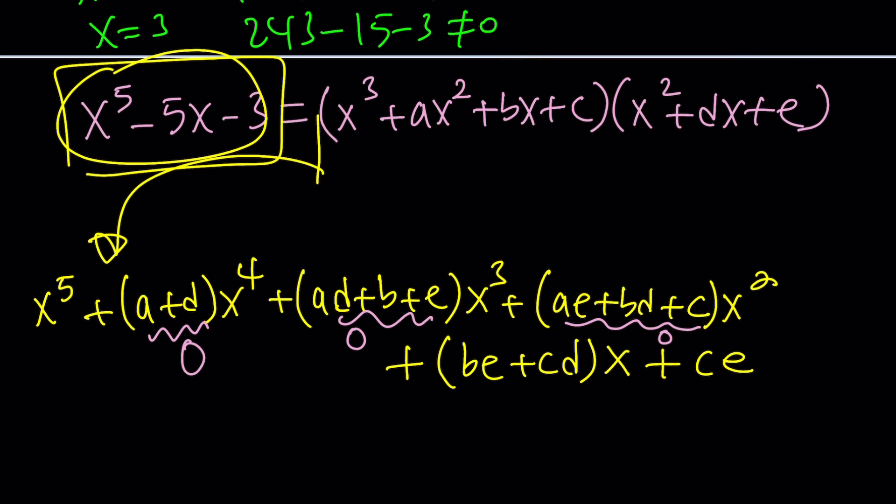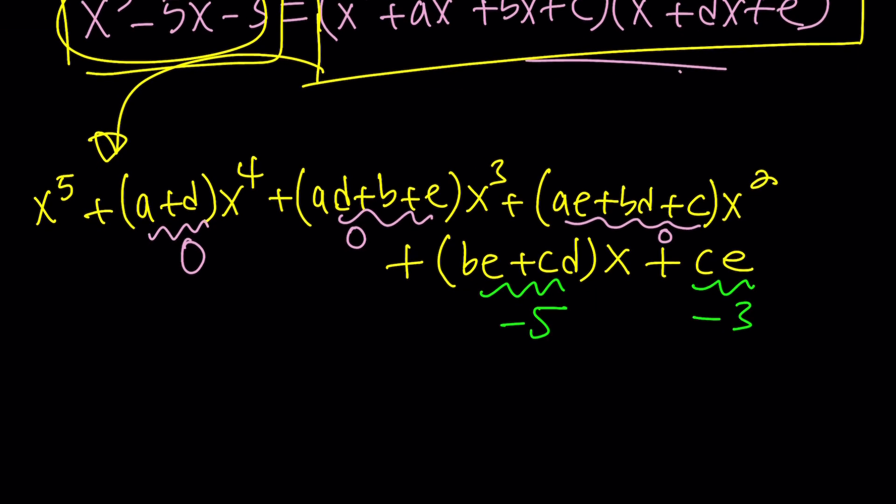Let's continue with our story. Now, what do we do next? So we basically get a system of equations, wait a minute, we're not done yet. What about the coefficient of x? It's negative five. What about ce? That's a negative three.